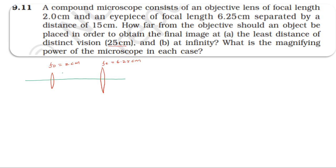The distance between the two lenses is 15 cm. The image distance from the eye lens is 25 cm. Since the incident ray is towards the right and the distance is measured opposite to the incident ray from the optical center of the eye lens, the image distance for the eye lens is minus 25 cm.